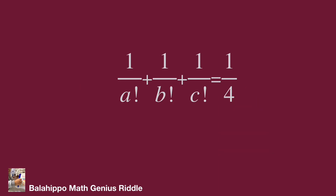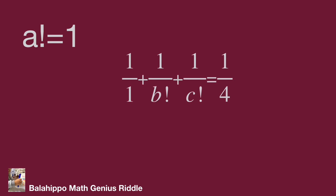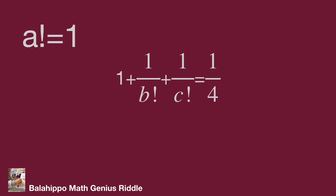Let's review each value. When A factorial equals 1, that means A equals 0 or A equals 1. Substituting A factorial by 1 into the equation gives 1 over 1 plus 1 over B factorial plus 1 over C factorial equals 1 over 4. Since 1 is larger than 1 over 4, that means 1 over B factorial plus 1 over C factorial would become negative. So A factorial equals 1 is not the answer.